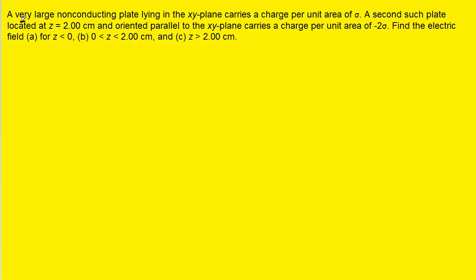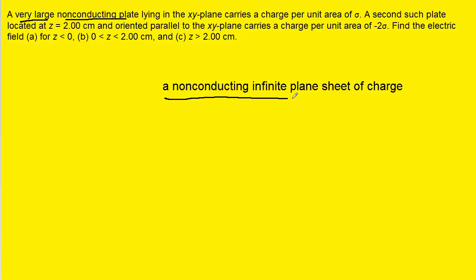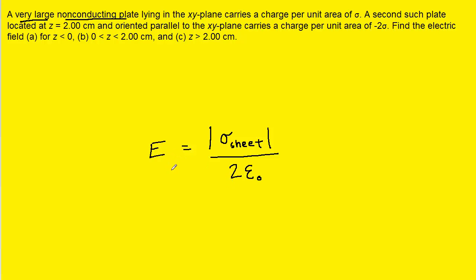We have a bit of a unique situation in this problem. We have a very large non-conducting plate. One of the examples in your physics book explains how to determine the electric field for a non-conducting infinite plane sheet of charge, and that's exactly what we have here. The equation derived using Gauss's law shows the magnitude of the electric field equals the uniform charge per unit area sigma divided by 2 times the constant epsilon.